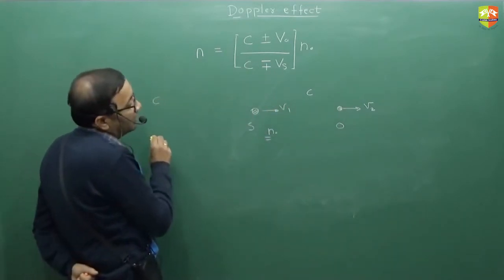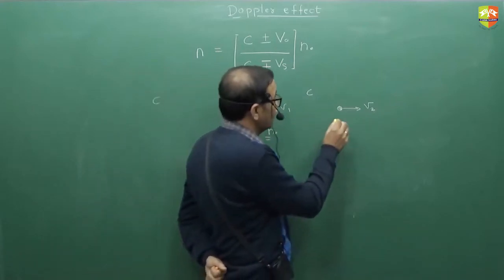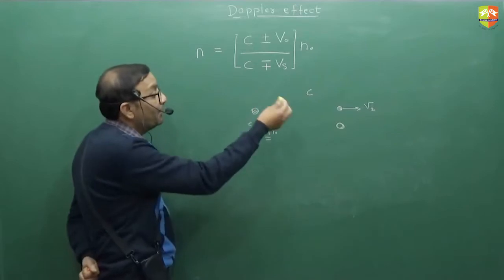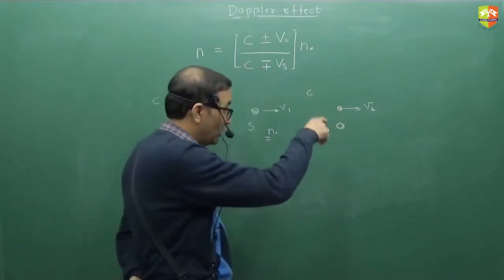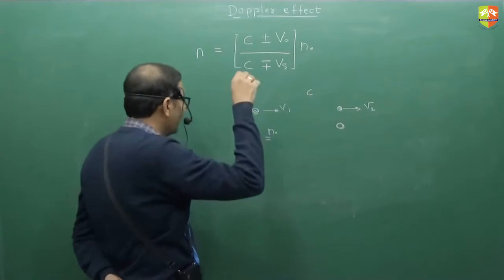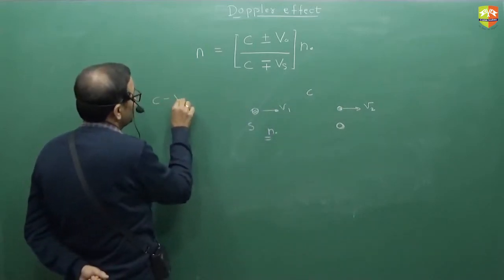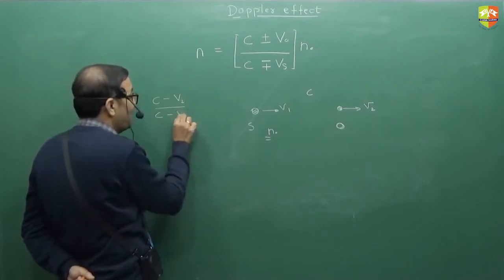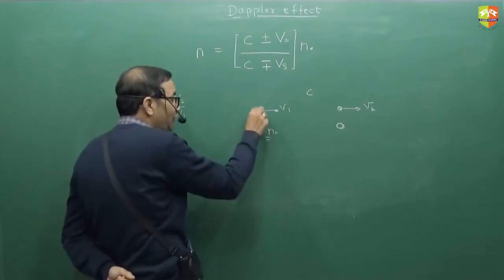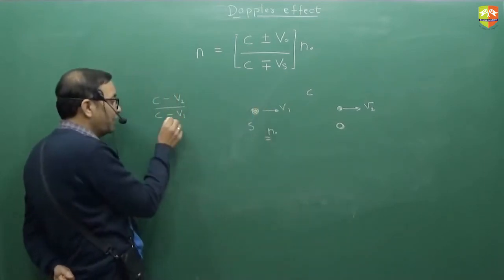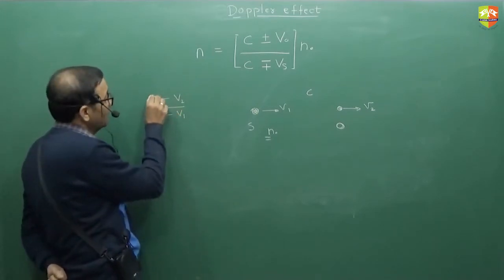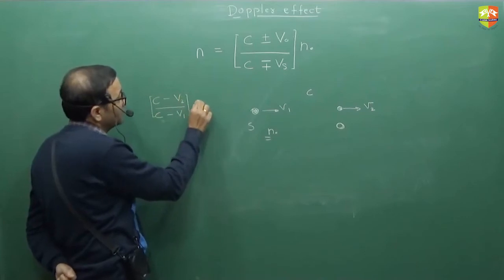So, what is the apparent frequency? Who is observer? This is observer. Observer will come in the numerator. c plus v2 or minus v2? Minus v2. Because of this, frequency should decrease. c minus v2 divided by c minus v1. Because of this also frequency should increase, and it is in the denominator. So you should decrease the denominator.